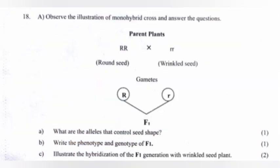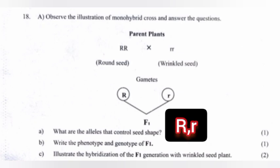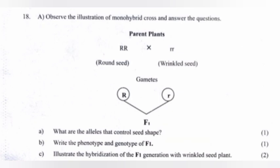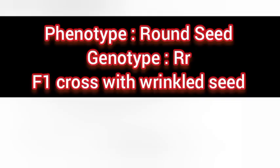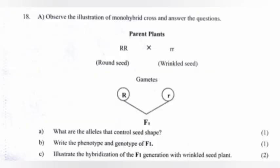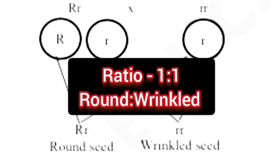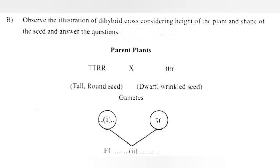Question 18A: Observe the illustration of monohybrid cross and answer. Part A: What are the alleles that control seed shape? Answer: Capital R and small r. Part B: Write the phenotype and genotype of F1. Answer: Phenotype — round seed; Genotype — capital R small r. Part C: Illustrate the hybridization of the F1 generation with wrinkled seed plant. Answer: The diagram ratio is 1:1, round to wrinkled.